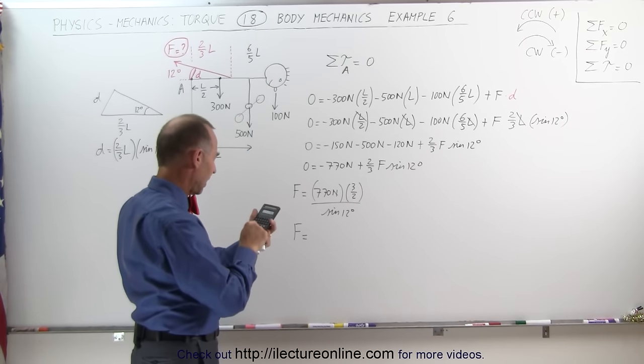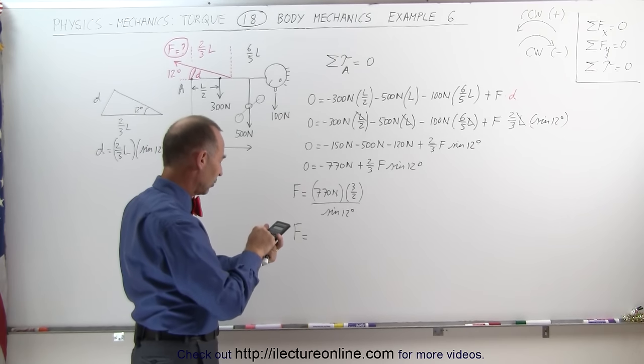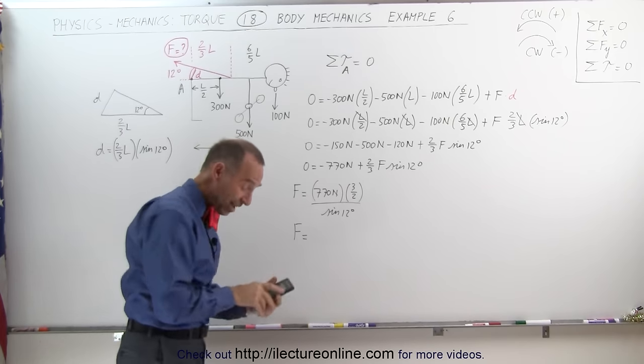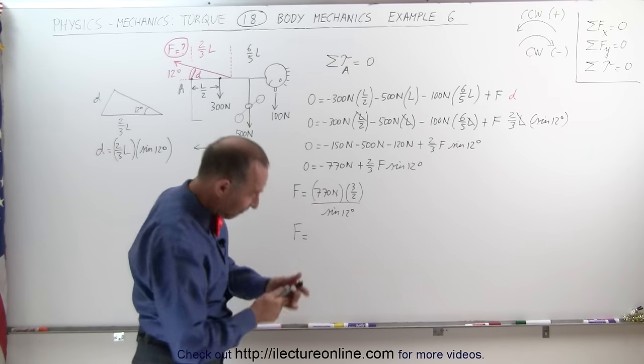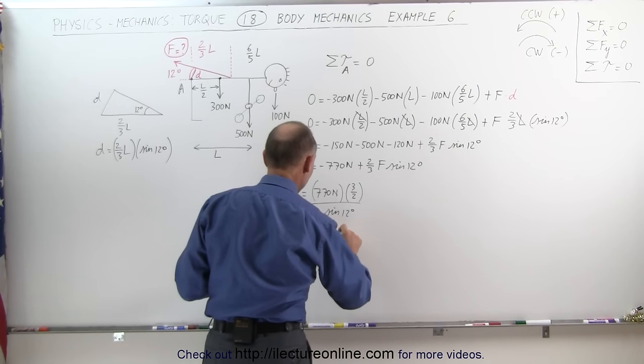Let me calculate it. 770 times 3 divided by 2 equals, and divide by the sine of 12 equals, and wow, 5555 newtons.